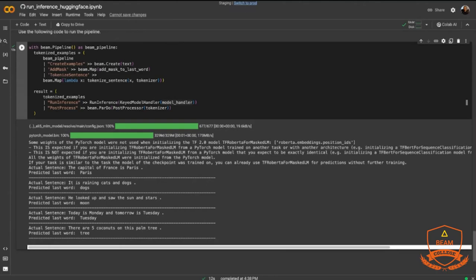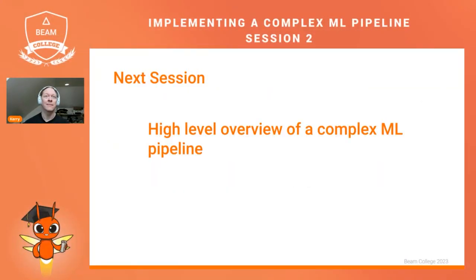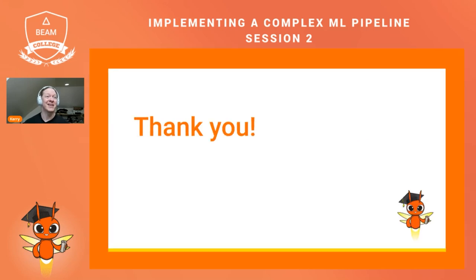This is a good example of the full process of finding a model and adapting it to Beam. Similar notebooks exist for all model handlers supported in Beam. Next session, we'll do a high-level overview of a complex ML pipeline: decoding voice telephone calls, classifying them, getting a response from an LLM, and transcribing that response back to a voice file. Go find some models, read some notebooks, and see if you can get something running in Beam — just one inference step. Good luck and see you again soon.